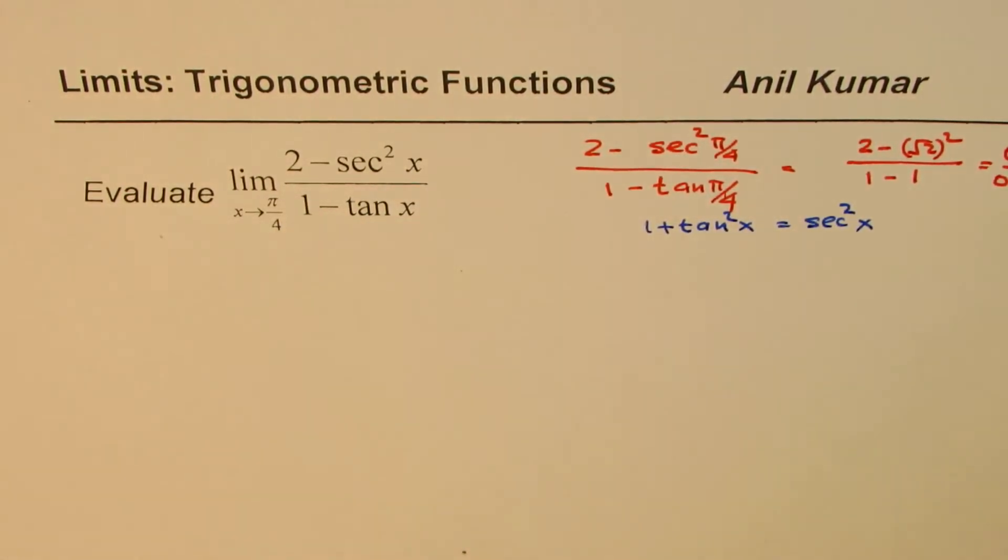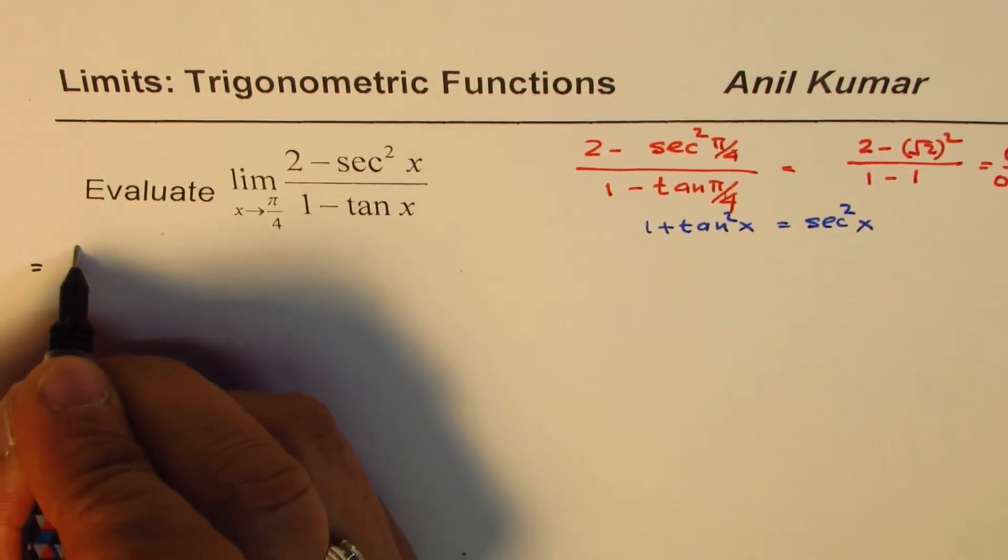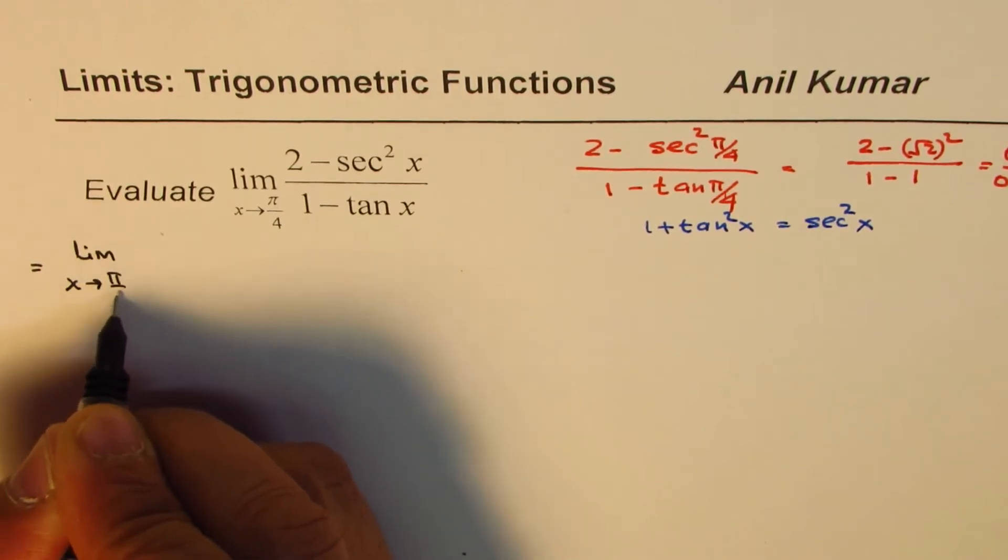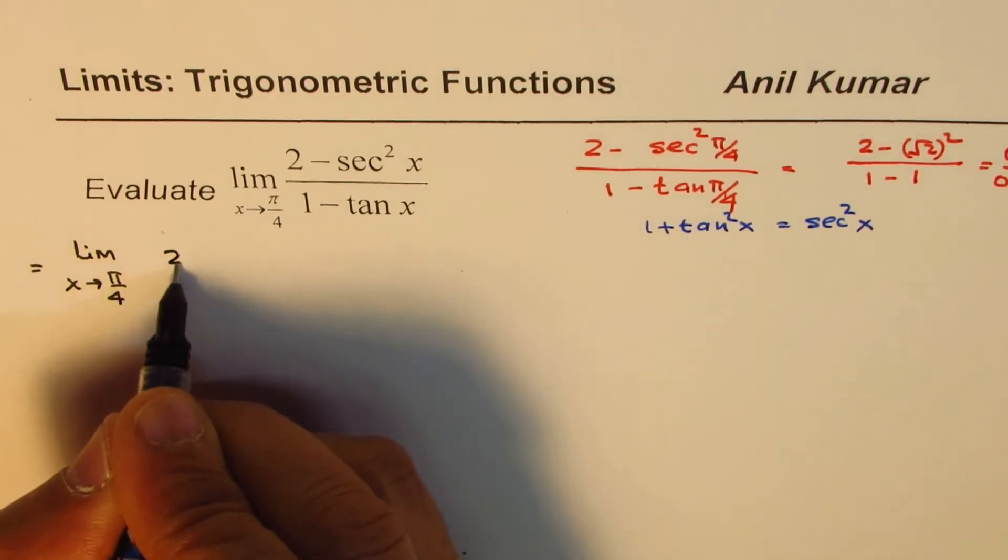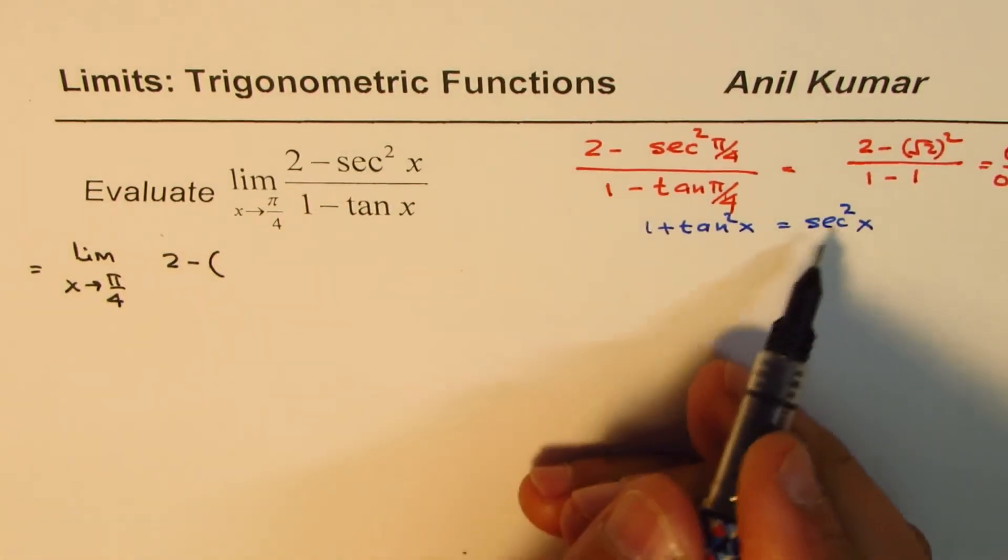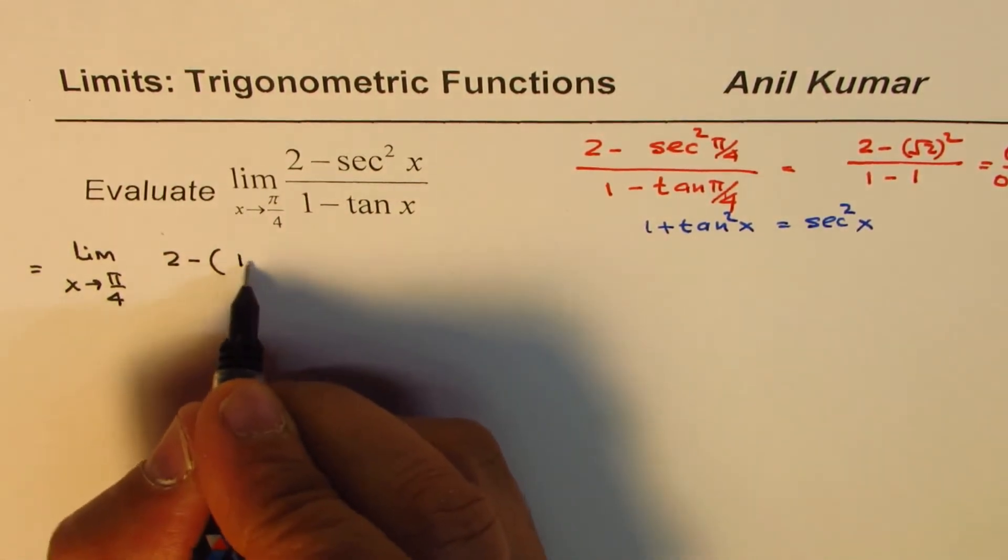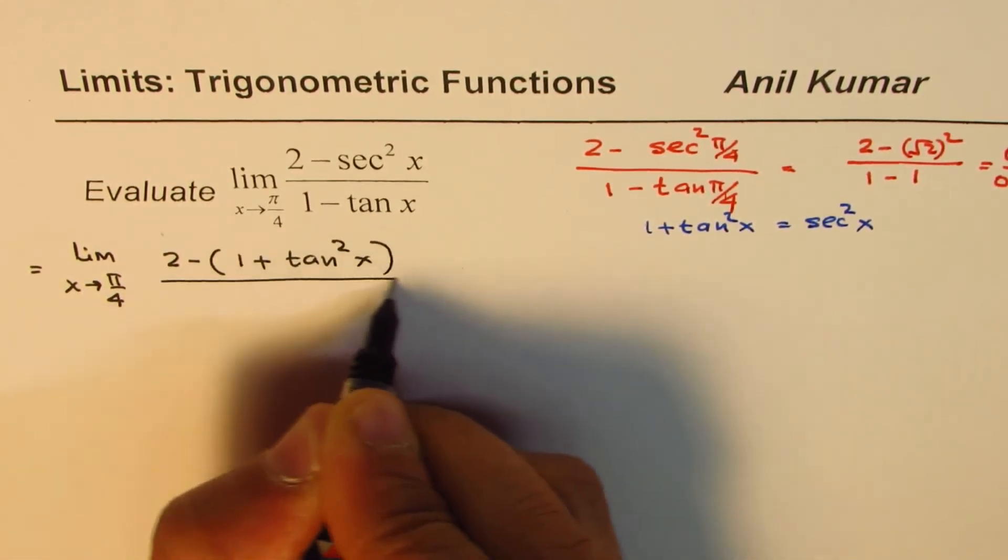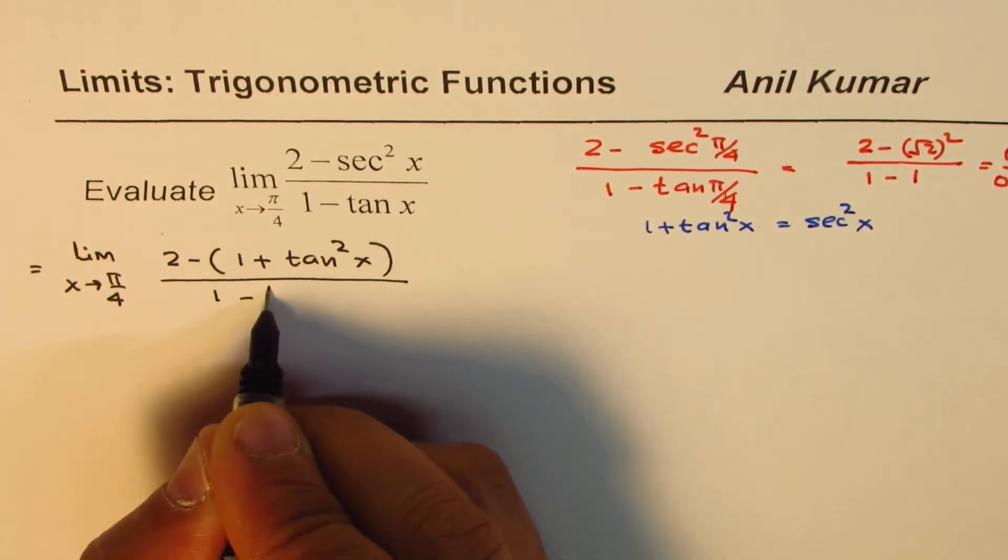Let's apply this identity and rewrite the question. We get: limit as x approaches π/4 of (2 - (1 + tan²x)) / (1 - tan x).